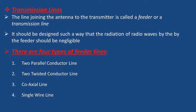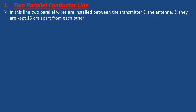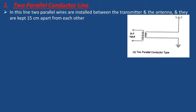In the two parallel conductor line, two parallel wires are installed between the transmitter and the antenna, and they are kept 15 centimeters apart from each other. One wire is positive and the other is negative or ground.